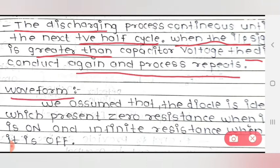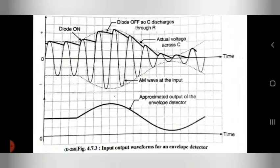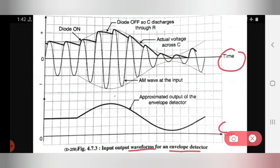Now we see the waveforms. We assume that the diode is ideal, presenting zero resistance when it is on and infinite resistance when it is off. This is the input-output waveform of the envelope detector. On the X-axis there is a time parameter. In one portion the diode will be on, and in another portion the diode will be off, so C discharges through R.